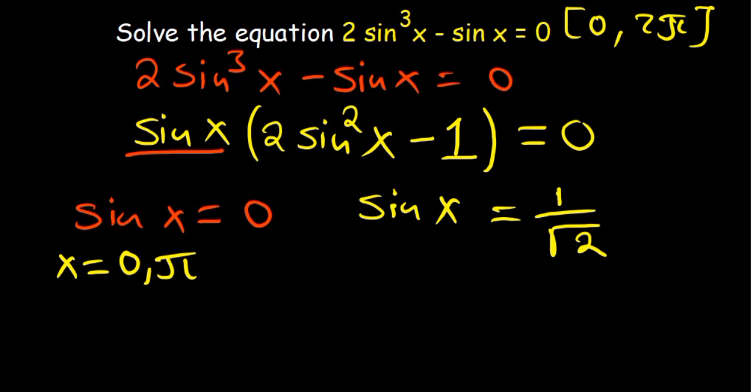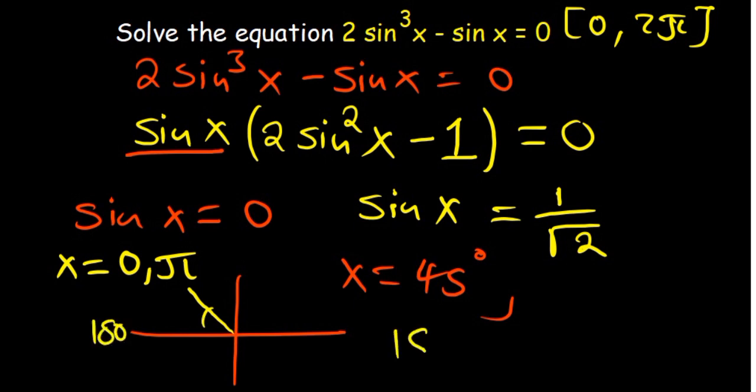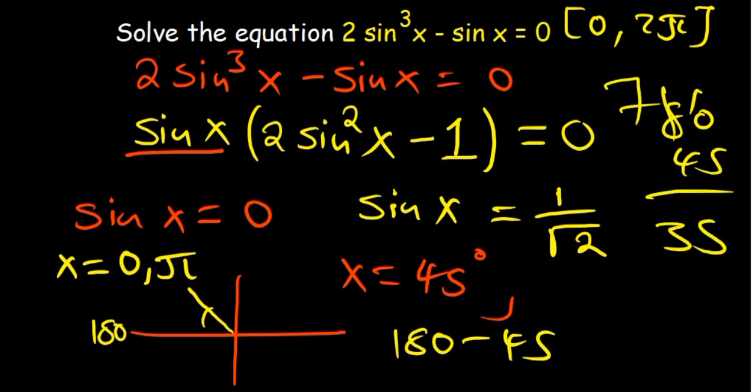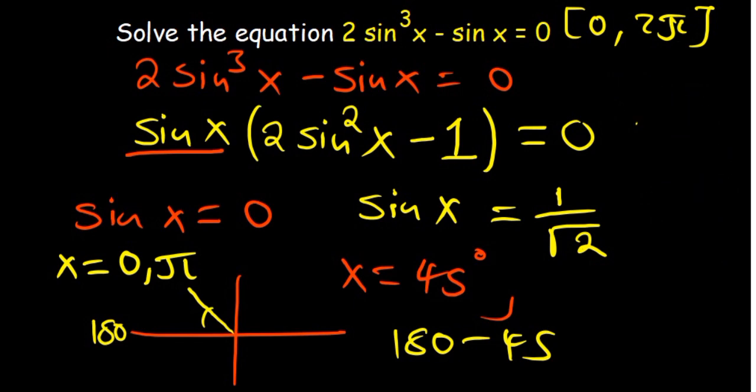So I'll start first of all with degrees in case you are not convenient with the radians. So my x is equal to 45. In which other quadrant do I expect sine to be positive? It's in the second quadrant. So we are 45, so if I need to subtract from 180 for me to get the other angle, 180 minus 45. So basically we have 135 degrees.